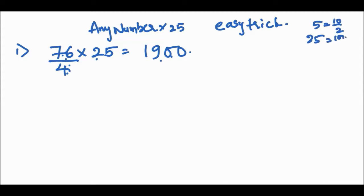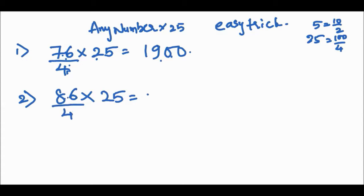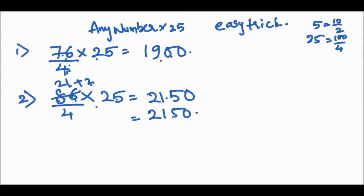For 25, we use 100 ÷ 4. Second example: 86 into 25. Divide 86 by 4: the nearest multiple of 4 below 86 is 84 (4 × 21 = 84), remainder 2. Remainder 2 means 25 × 2 = 50. So the answer is 2150.